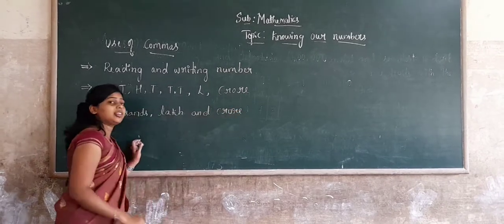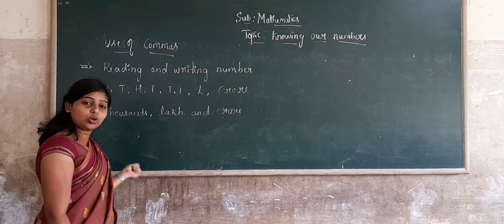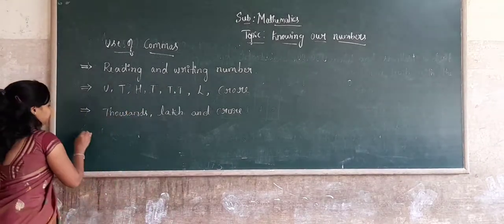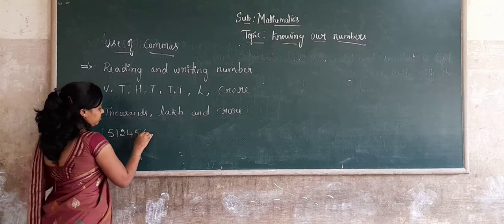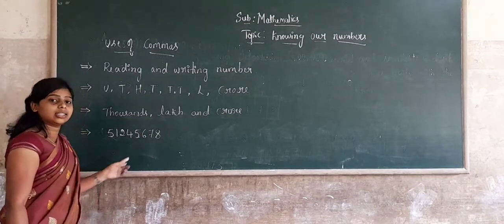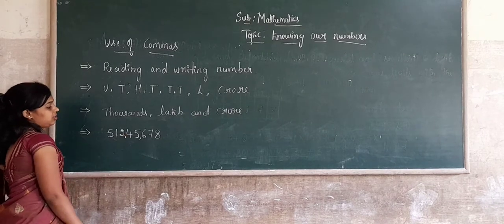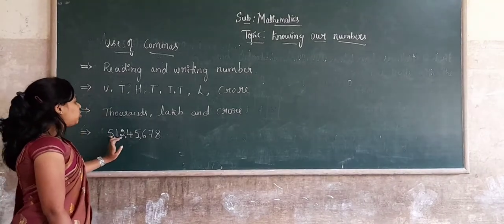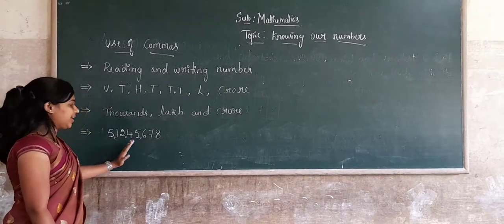In the Indian system of numeration, the first comma comes after three digits to mark the thousands place. The second comma comes two digits later to mark the lakh place. The third comma comes two digits later to mark the crore place. For example: 5,12,44,678 is read as five crore, twelve lakh, forty-four thousand, six hundred seventy-eight. This is how we read numbers in the Indian system of numeration.